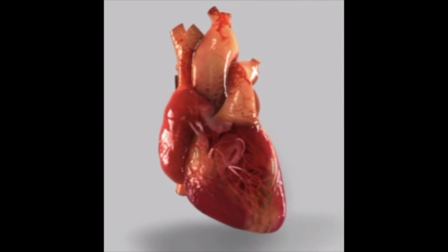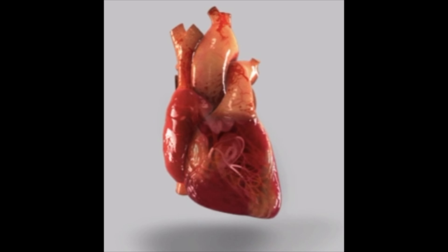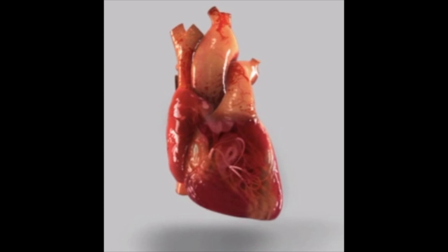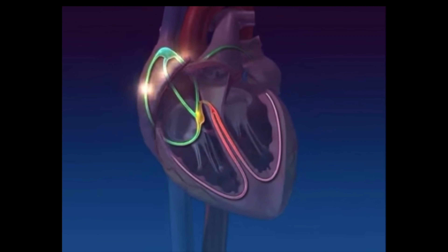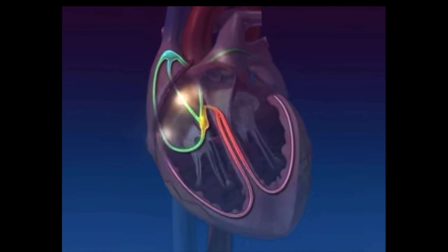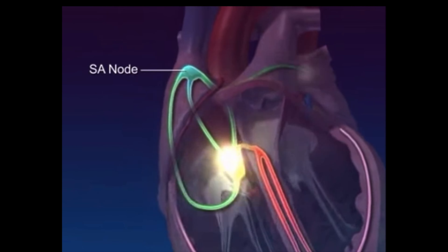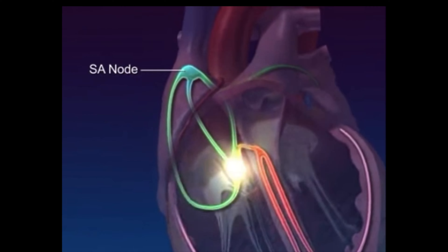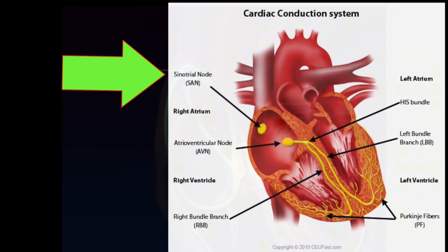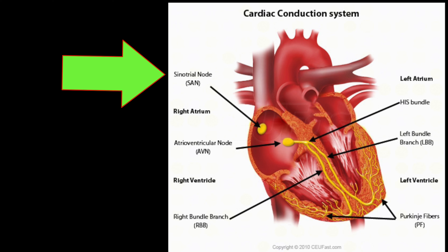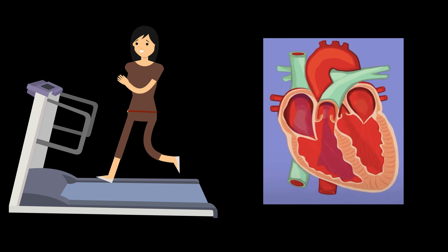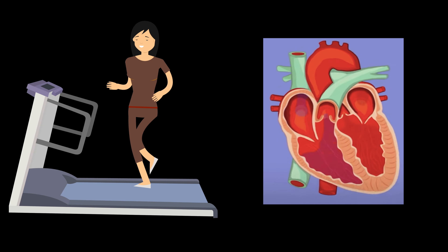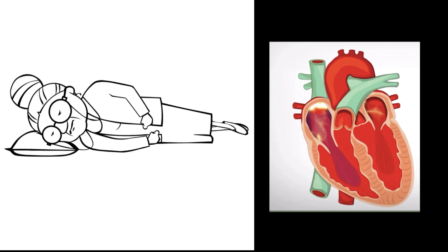The timing of the heart's contractions is directed by the heart's electrical system. The electrical impulse begins in the sinoatrial, or SA node, located in the right atrium. Normally, the SA node adjusts the rate of impulses depending on the person's activity — for example, increasing the rate during exercise and decreasing it during sleep.